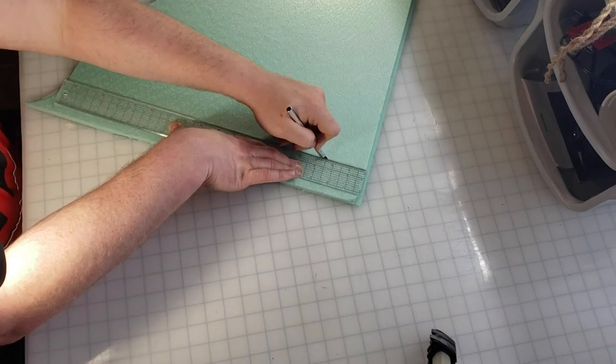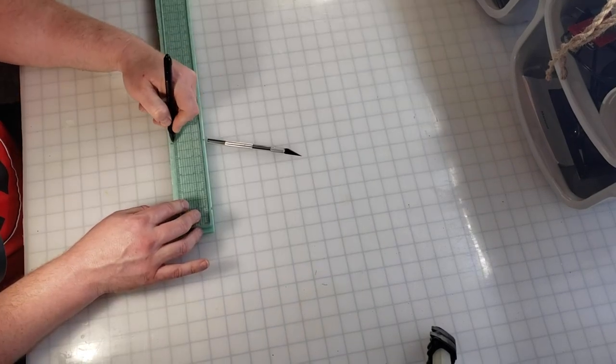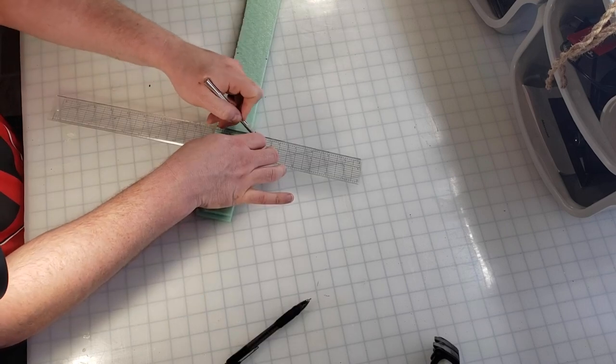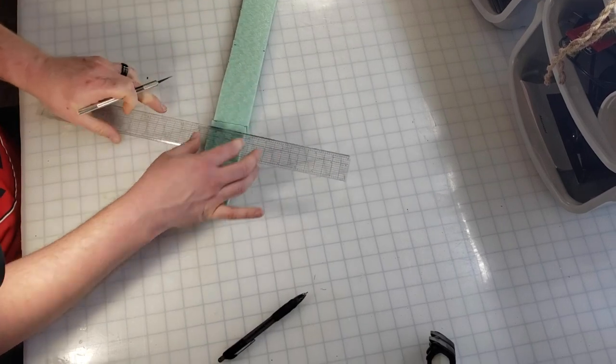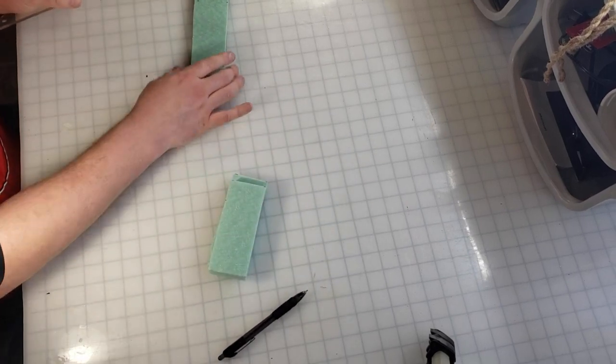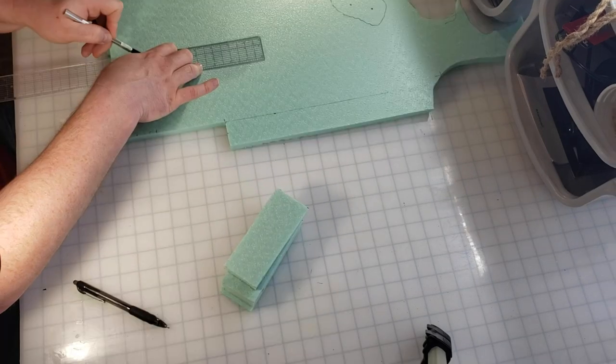First we're gonna cut the sides of the bridge. I'm doing two inch by five inch pieces of XPS foam. You only need two for this bridge but you'll see me cut four and that's because I'm gonna sneak a second bridge in while I'm doing the first. Always make two or more because craft.